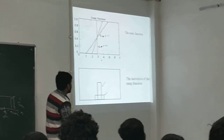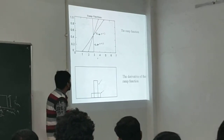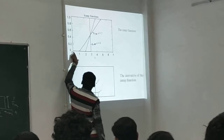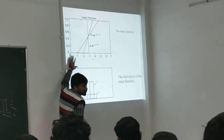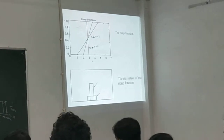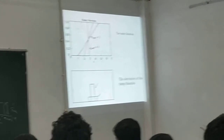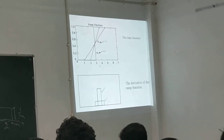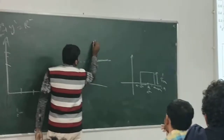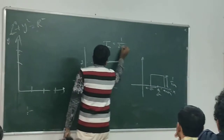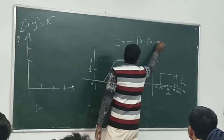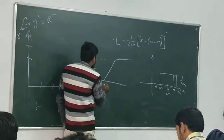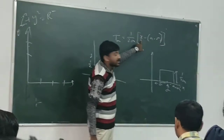Now I will look at another function — the ramp function. Here I have drawn three ramp functions. The first one is the ramp function. This ramp function can be defined as follows. The ramp function T sigma of X equals 1 over 2 sigma times X minus A minus sigma, for the interval A minus sigma to A plus sigma. If you put X equal to A minus sigma, then T sigma equals 0. At the midpoint X equals A, it will be one half.